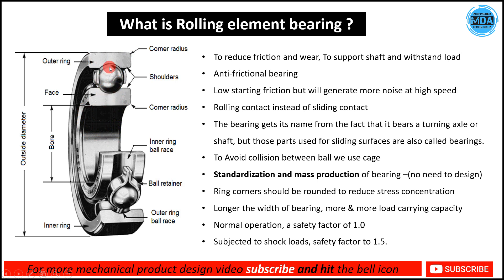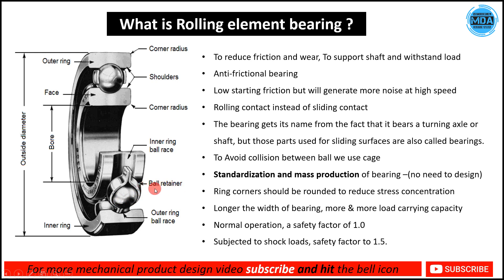This is possible because of the rolling elements — you can see the balls here. The outer ring is fixed and the inner ring is rotating; the reverse is also possible. The bearing gets its name from the fact that it bears the turning shaft or axial load. To avoid collision between the balls we use the cage, also called the ball retainer.